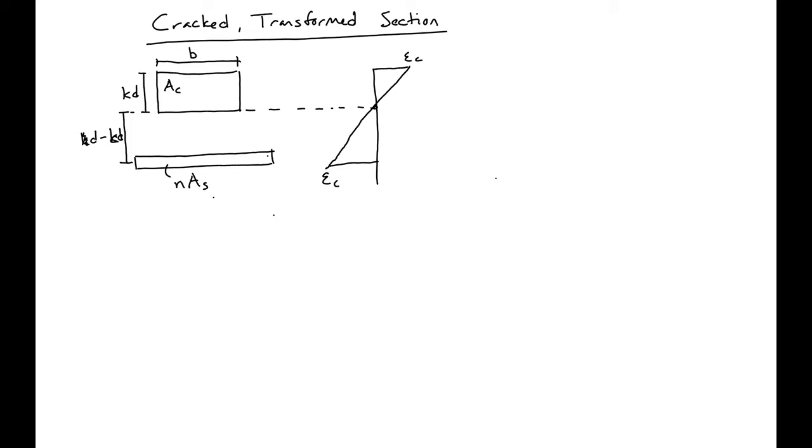So what we'll do to find our neutral axis depth KD is we'll take the area of the sections above the neutral axis times the distance to the neutral axis equal to the area of areas below the neutral axis times the distance from that area to the neutral axis. In our case, we have one area above and one area below.